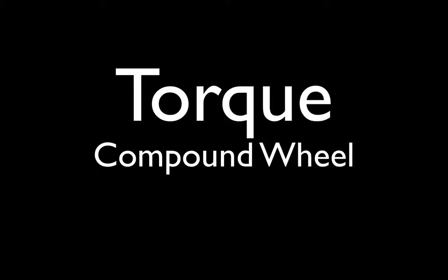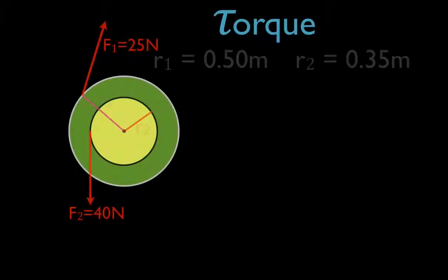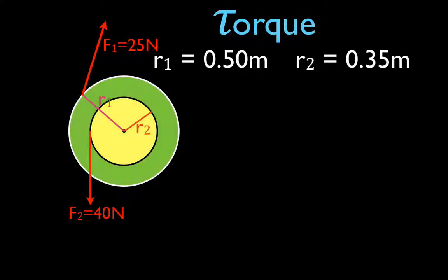In today's video we're going to go over another problem involving torque. This video is called the compound wheel — it's called that because it's one wheel that is actually made up of two wheels.